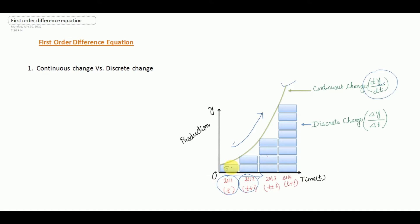Let us assume production in 2011 was 50 tons and production in 2012 is 100 tons. So the change in y in 2012 over 2011 is: since production in 2012 is 100 tons and production in 2011 is 50 tons, the change in production in these two successive periods is 50 tons. This is the discrete change of y with respect to time.